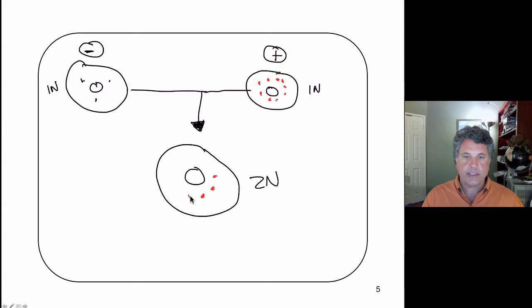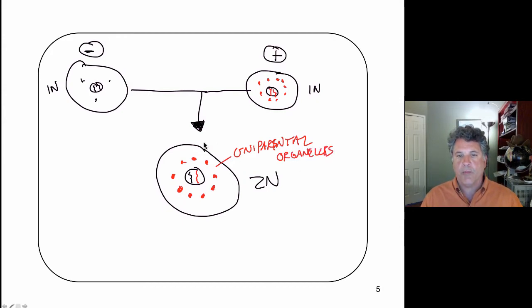So there will be uniparental inheritance of the organelles. This is almost universally true for organisms like Chlamydomonas. We have uniparental inheritance of the organelles. Whereas the nuclear genes, the chromosomes here and chromosomes over here, are going to be a mixture of both. The nuclear genes arrange for this plus-minus differentiation which brokers this outcome by putting certain molecules on the cell surface.